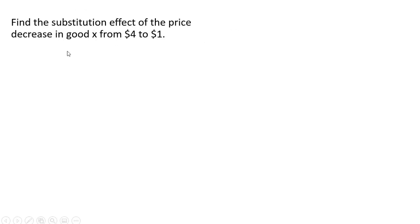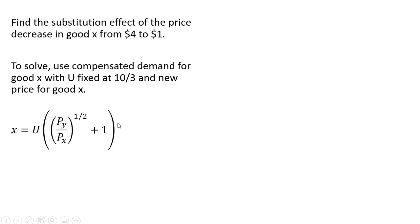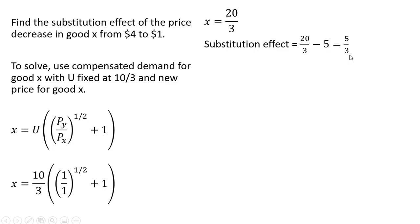Let's find the substitution effect of a price decrease in good X from $4 to $1. We use the compensated demand for good X with utility fixed at 10/3, and plug in the new price of good X equal to $1. The price of good Y remains 1. Solving, we get X equals 20/3. The substitution effect is 20/3 minus 5 — since the consumer originally purchased 5 units — which equals 20/3 minus 15/3, or 5/3.